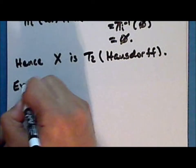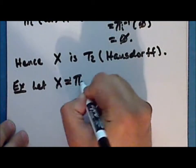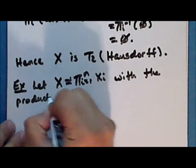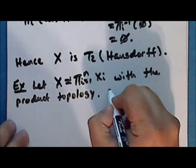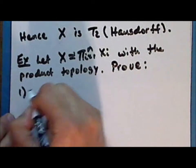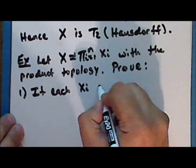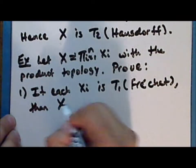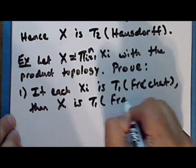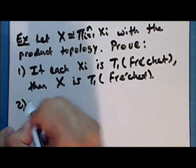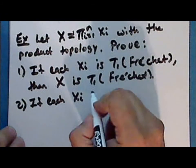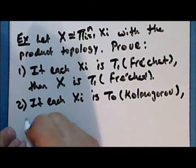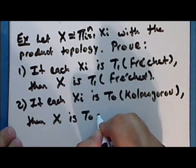As an exercise: let X be the finite product of n topological spaces with the product topology. Prove that if each of the spaces X sub i is T1 or Fréchet, then the product space is T1 or Fréchet, and if each of the factor spaces X sub i is T0 or Kolmogorov, then the product space is T0 or Kolmogorov.